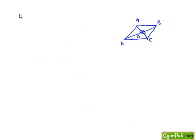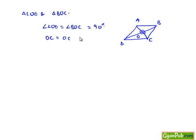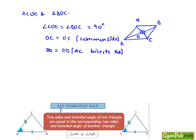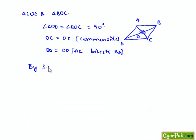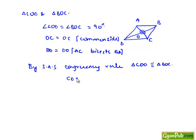Now let us consider triangles COD and BOC. In these, angle COD = angle BOC = 90 degrees, OC = OC since it is a common side for both triangles, and OB = OD as AC bisects BD perpendicularly. Since two sides and the included angle are equal, by SAS congruence triangle COD is congruent to triangle BOC. Therefore CD = BC. Let this be equation number three.